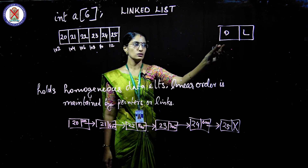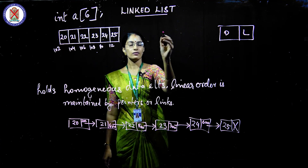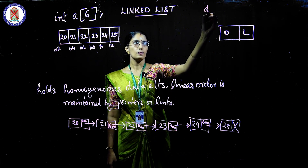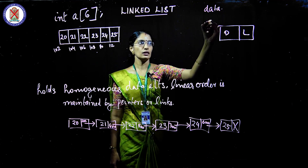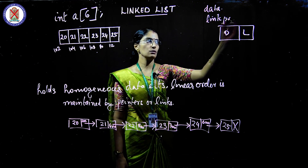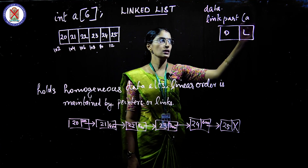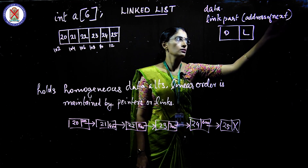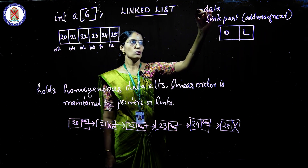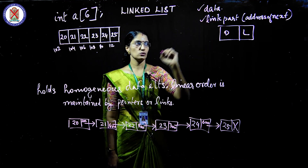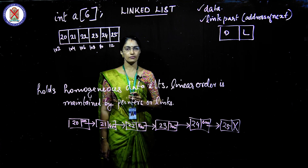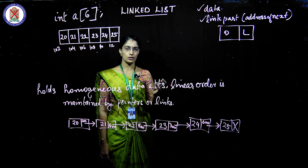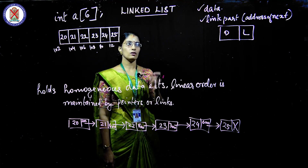Since we need to store both data and an address, this involves a user-defined data type. We have learned about user-defined data types like structure, union, and enum. Mostly we will be using structure. As you know, when you use a structure you use the keyword 'struct', followed by a tag name.